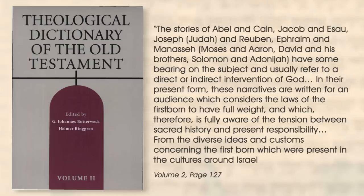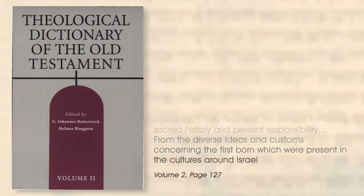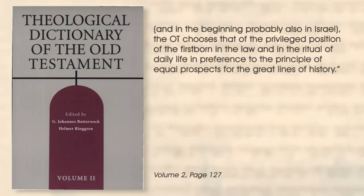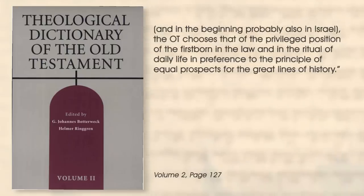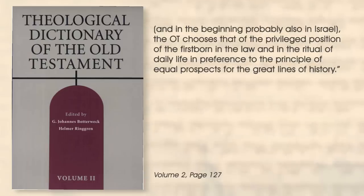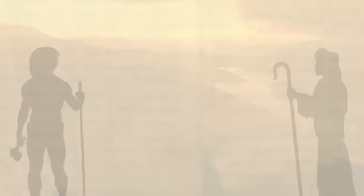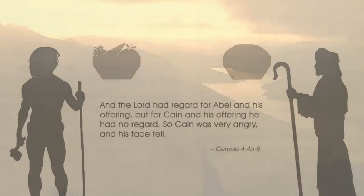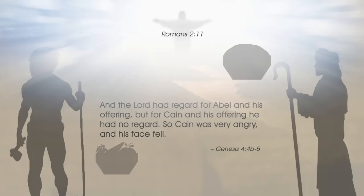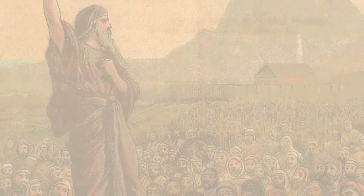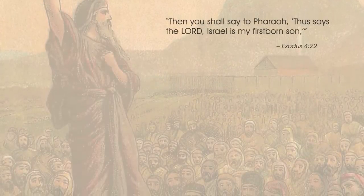From the diverse ideas and customs concerning the firstborn which were present in the cultures around Israel, the Old Testament chooses the privileged position of the firstborn in the law and in the ritual of daily life in preference to the principle of equal prospects for the great lines of history. In other words, within that culture, Cain was expected to receive special favor being the older. But the author's example of Cain and Abel is noted on purpose to show that such cultural norms do not apply to God — he shows no favoritism based on birth order. God accepted Abel's gift because of where his heart was, not based on appearance. This example served to remind Israel that their destiny would be measured by their ethical behavior, not on being appointed as God's firstborn.